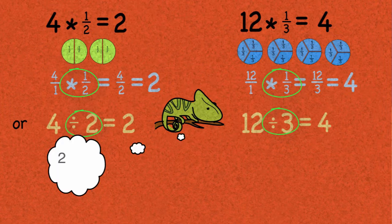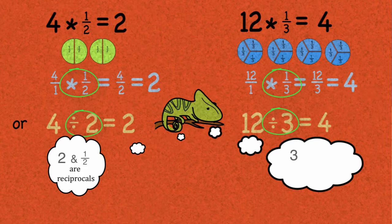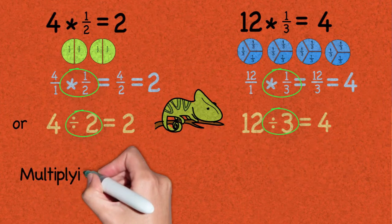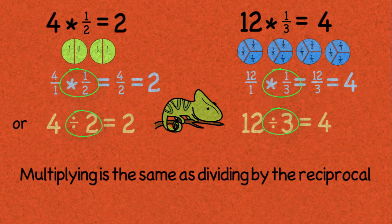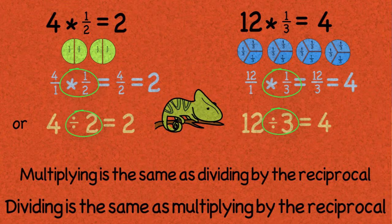I noticed that the number 2 and the fraction 1 half are reciprocals. And I also noticed that 3 and 1 third are reciprocals. So that would suggest that multiplying is the same thing as dividing by the reciprocal. And perhaps even more useful, that dividing is the same as multiplying by the reciprocal.